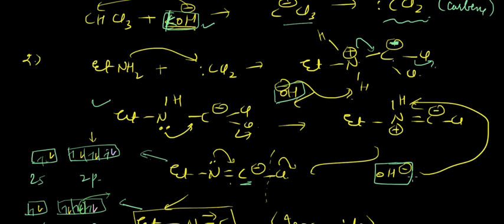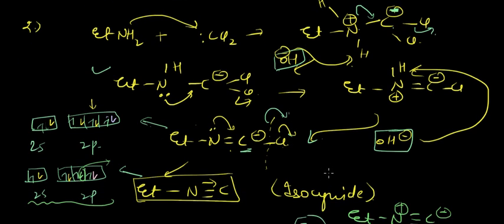The third mole of OH⁻ is now consumed by attacking the hydrogen atom attached to the nitrogen atom. H₂O is formed, the lone pair is again intact on nitrogen, and it is donated to carbon. Simultaneously, the C–Cl bond cleaves and Cl⁻ leaves, giving the final isocyanide product (Et–NC).